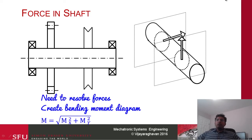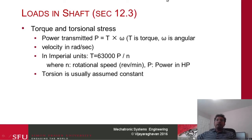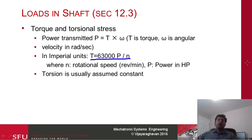When transmitting power P, in SI units power equals torque times angular velocity omega in radians per second. In imperial units, the torque is T = 63,000 × P / N, where N is in RPM and P is in horsepower. Torsion is usually assumed constant; however, if the power changes, the torsion would also change.